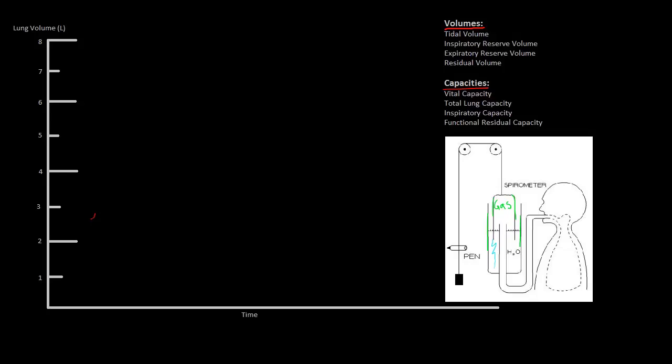So back to the patient: they begin at two and a half to three liters of volume, and as they take a normal breath they're going to climb towards about four liters of volume in their lungs. At the peak, inspiration is finished and the patient will begin to passively exhale, returning back to that pre-inspiratory volume. This continues on in a repeating pattern. Now let's imagine this patient was instructed to take as deep a breath as they could.